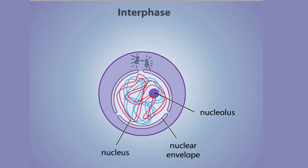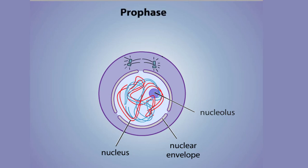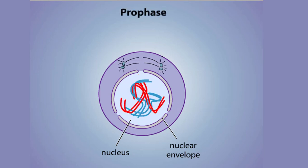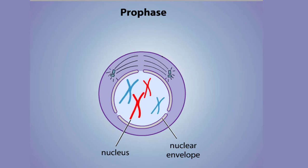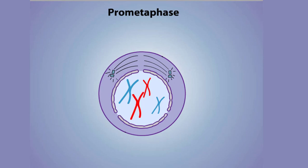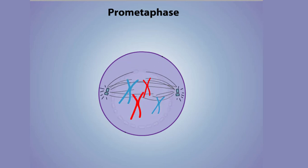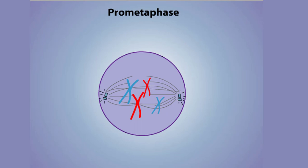In the first phase of mitosis, called prophase, chromatin coils and condenses, resulting in compacted chromosomes that are visible with a light microscope. In prometaphase, the nuclear envelope breaks down and microtubules emanating from the centrosomes attach to the chromosomes. The microtubules attach to structures called kinetochores, which are found in the centromeres of the chromosomes.